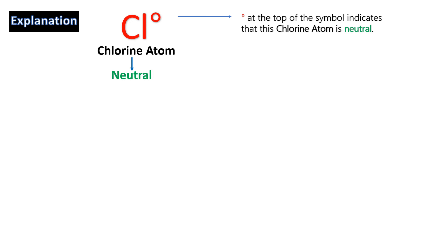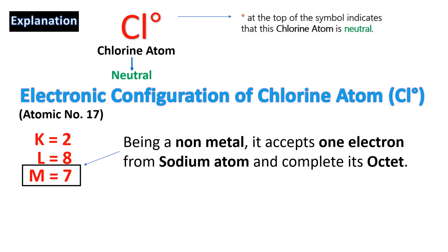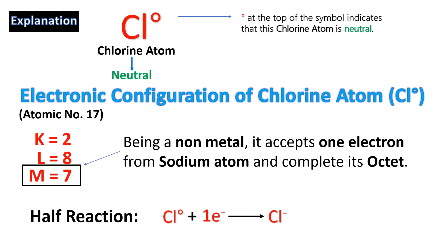On the other hand, there is a chlorine atom. Chlorine is a non-metal; the zero at the top of its symbol indicates it is currently neutral. The electronic configuration of chlorine, atomic number 17, has K shell: 2, L shell: 8, and M shell: 7 electrons. Sodium loses its electron and chlorine, being a non-metal, accepts that one electron to complete its octet and become stable. The half-reaction: neutral chlorine accepts one electron, gaining negative charge, so its oxidation number changes from 0 to −1.